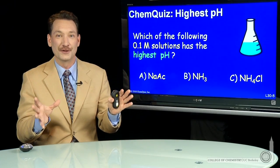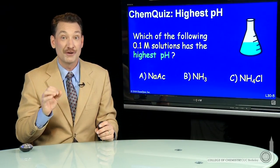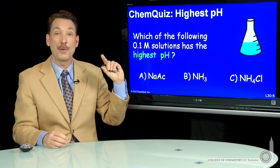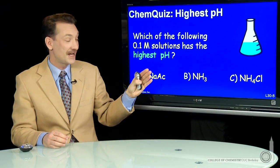Let's look at some weak acids and weak bases in solution and see if we can predict which will have the highest pH. So here I have three solutions. They'll all be at 0.1 molar. Which has the highest pH?